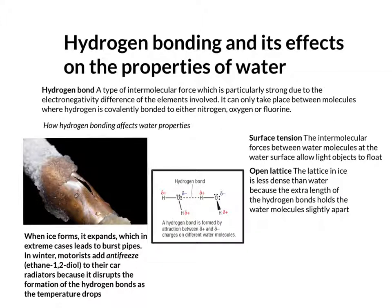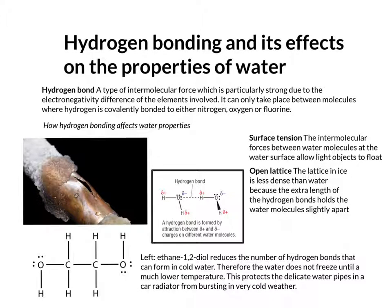In winter, to stop this happening to a car radiator, which is quite an expensive job to replace, motorists add antifreeze, which is a molecule called ethane-1,2-diol. If you dissolve ethane-1,2-diol in the water in your radiator, it reduces the number of hydrogen bonds that can form because of the length of its molecule. So the water doesn't freeze until a much lower temperature, which protects the delicate water pipes in a car radiator from bursting when the weather turns very cold.